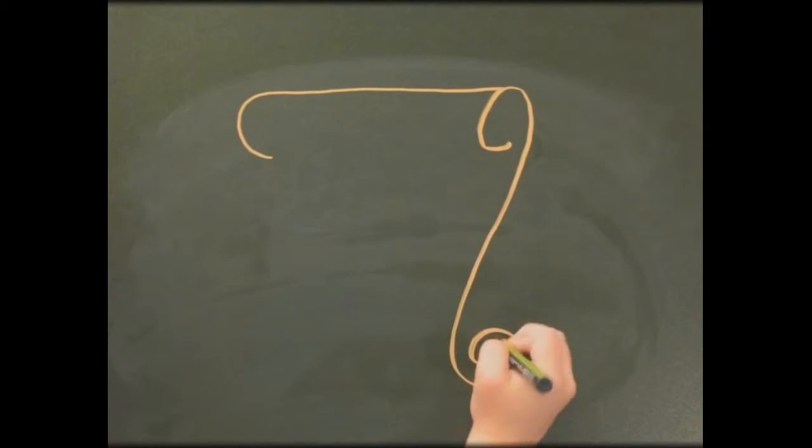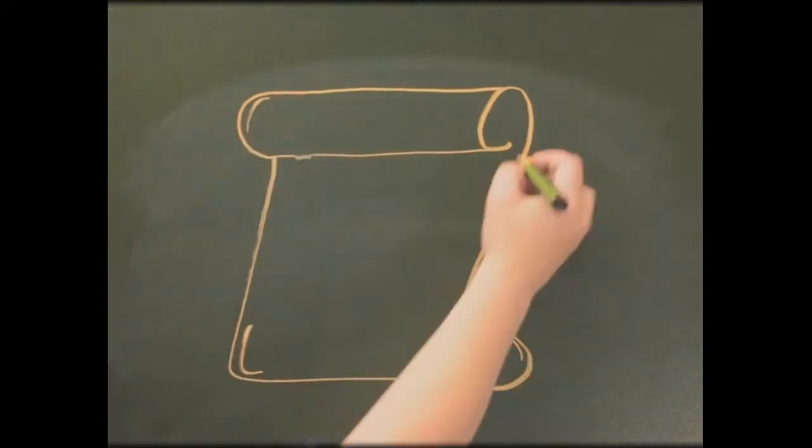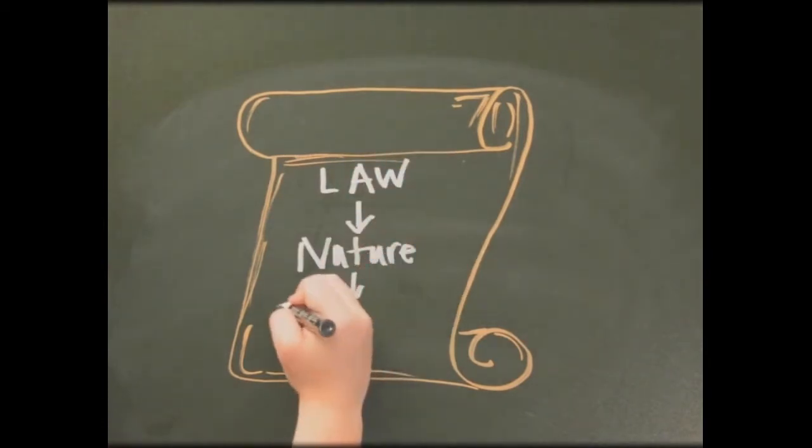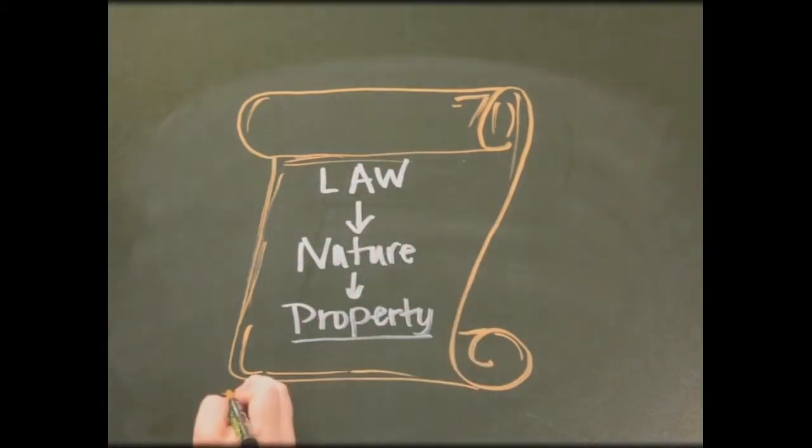Under the current system of law, nature is considered to be property. When something is considered property, that often gives the property owner the right to damage it. Therefore, those who own these natural communities are largely allowed to use them however they wish, even if that includes destroying it.